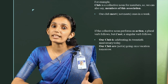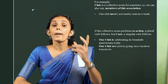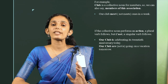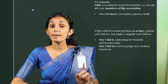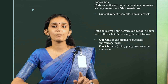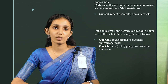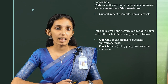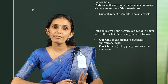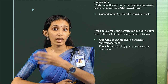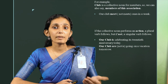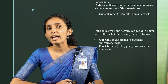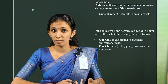For example, 'Our club is celebrating its 20th anniversary today' — the club performs no action, hence a singular verb is used. But 'Our club are going on a vacation tomorrow' — here the club is performing an action, going, hence a plural verb. 'The audience are partial in their judgment of the winner' — the answer is 'are' because the collective noun performs an action, that is judgment.